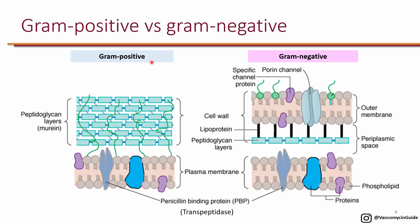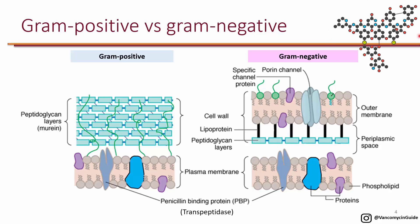Vancomycin binds to the D-ala-D-ala residue of the peptidoglycan layer and therefore inhibits formation of the peptidoglycan layer. In gram-negatives, there is an outer membrane above the peptidoglycan layer. Because vancomycin is a huge molecule, it cannot go through the outer membrane of gram-negative organisms and therefore cannot reach the peptidoglycan layer. Therefore, vancomycin does not have activity against any gram-negative organism.